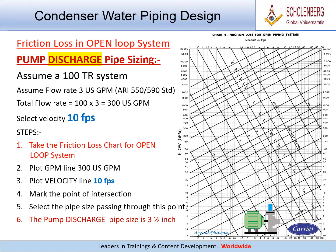Pump discharge pipe sizing. Assume a 100 TR system. Assume flow rate 3 USGPM per ARI 550-590 standard. Total flow rate equals 100 multiplied by 3 equals 300 USGPM. Select velocity 10 FPS.